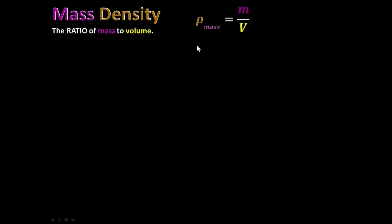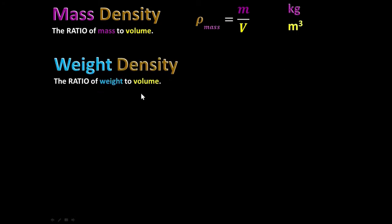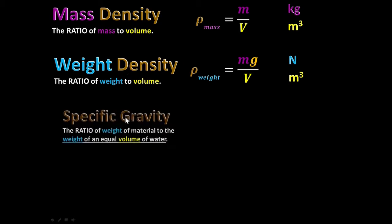We have mass density, which is the ratio of mass to volume — just what we were talking about — measured in kilograms per cubic meter. But we also have weight density, which is the ratio of how much the object weighs to its volume. Since one kilogram of mass weighs 9.8 newtons, you can convert mass into weight by multiplying by the acceleration of gravity. Weight density would be the weight divided by volume — newtons per cubic meter.